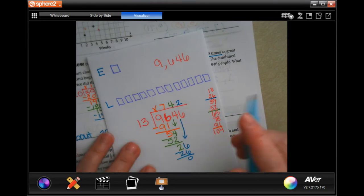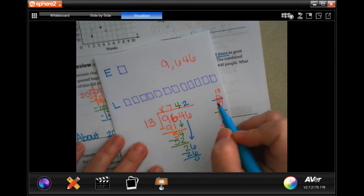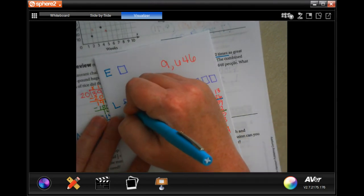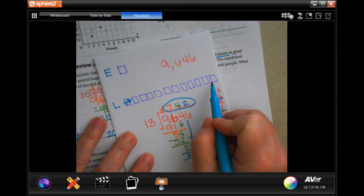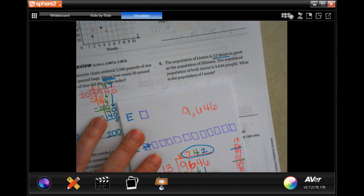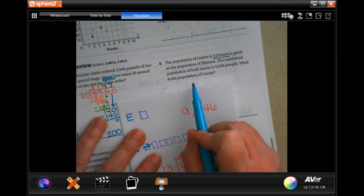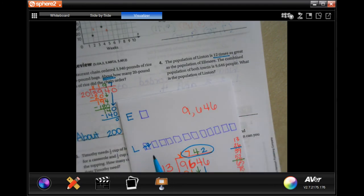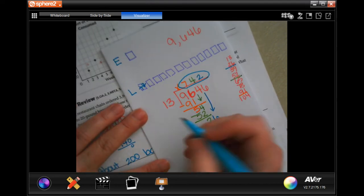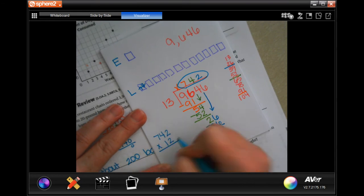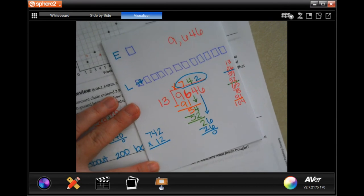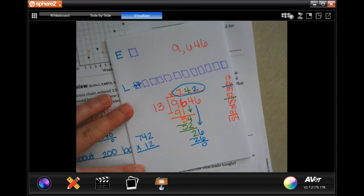So now we're going to bring down our six, and 26 is just two times. So now that means that each one of these boxes is worth 742. Each one of them. Now it wants to know what the population of Linton is, the one that has 12 boxes with 742 in each one. So we're going to go 742 and we're going to multiply that by 12.